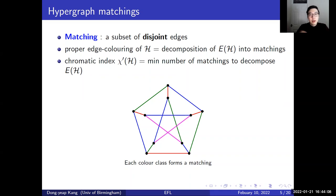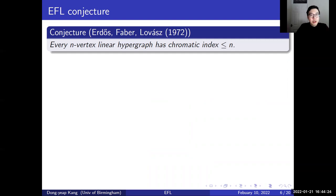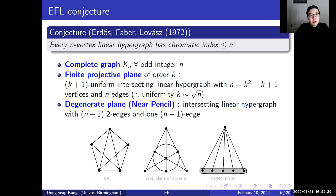Here we have a Petersen graph colored with four colors, and each color class forms a matching. In 1972, Faber and Lovász conjectured the following: every n-vertex linear hypergraph has chromatic index at most n. There are several examples of n-vertex linear hypergraphs with chromatic index exactly n, and let me introduce three typical examples.